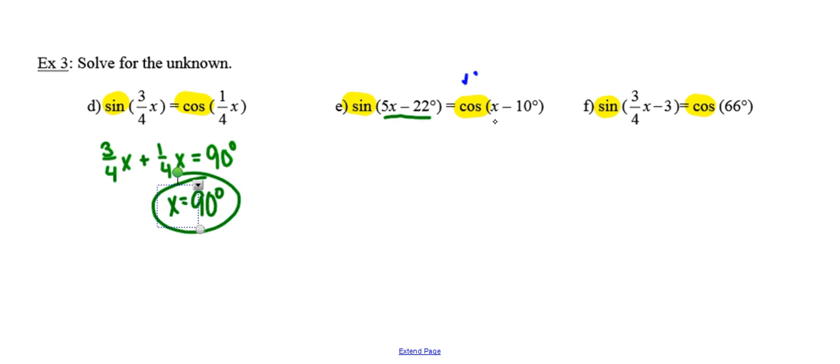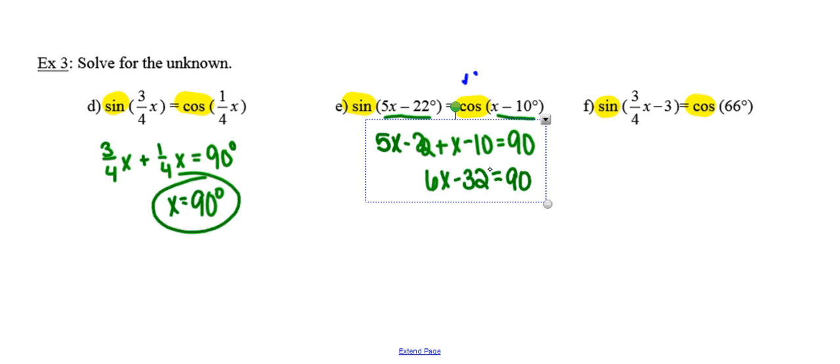In this example, the first angle, 5x minus 22 degrees, plus the second angle, x minus 10 degrees, must sum up to 90 degrees. I'm going to add 32 to both sides.